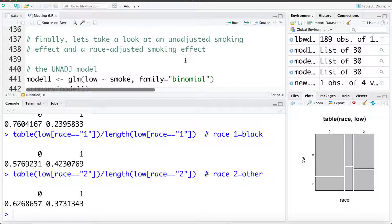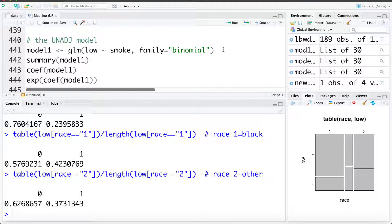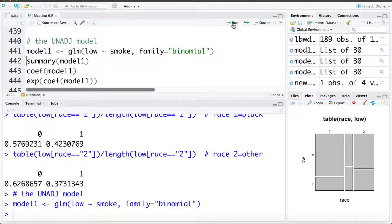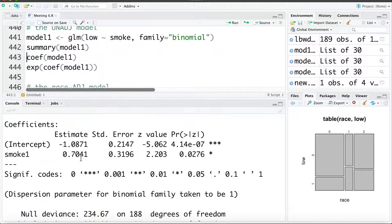And finally we can take a look at what happens when we adjust for race. So first I'm going to fit an unadjusted model. Here I'm going to fit a model that uses only smoke to try and predict if a baby's low birth weight or not. I'll call that model 1. We can take a look at a summary of the model and we can see here, here's the unadjusted smoking coefficient of 0.70 and its standard error of about 0.32.